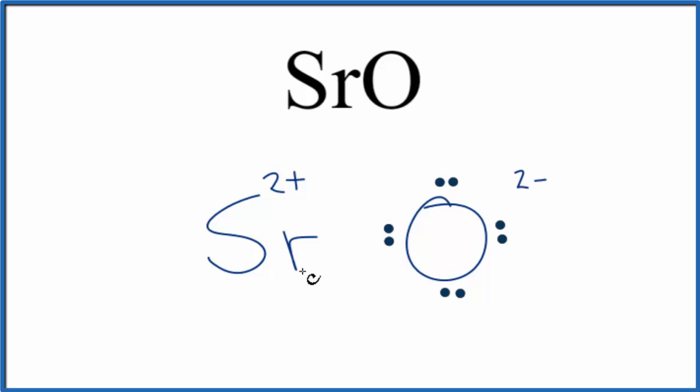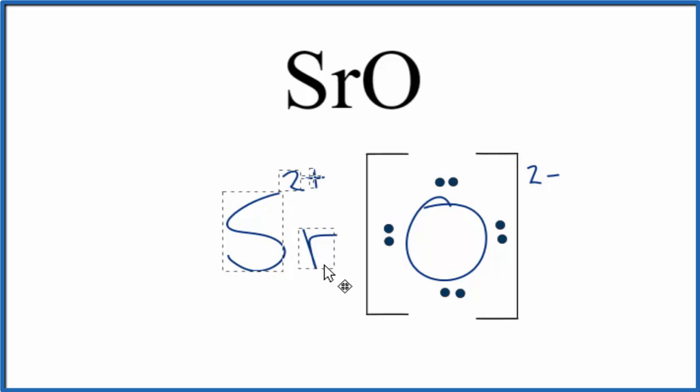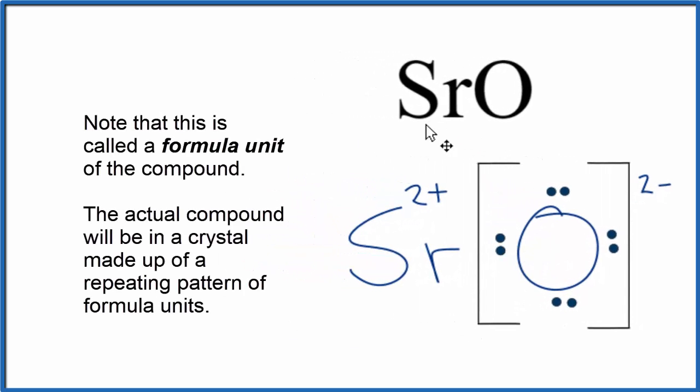And to show that the strontium lost those electrons or transferred them to the oxygen, we're going to put brackets around the oxygen. Sometimes you'll also see brackets around the positive ion as well. But the point is, this is an ionic bond, and the electrons were transferred from the metal to the nonmetal. Now we have this positive charge and the negative charge. Opposite charges attract. We form the ionic bond. So this is the Lewis structure for SrO, strontium oxide.